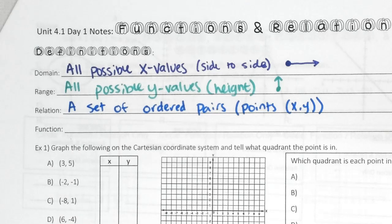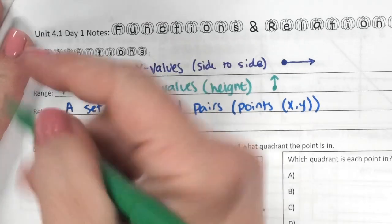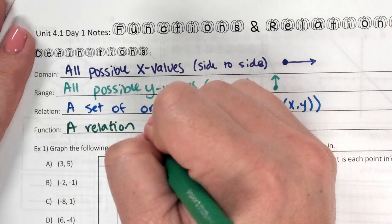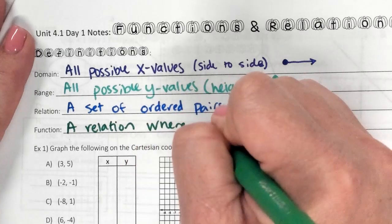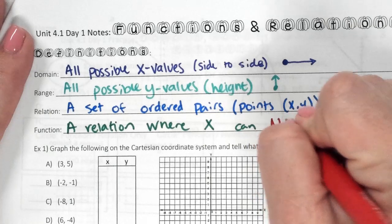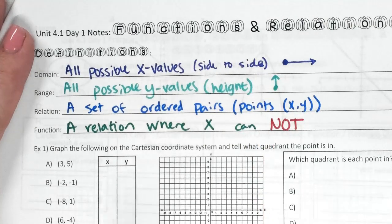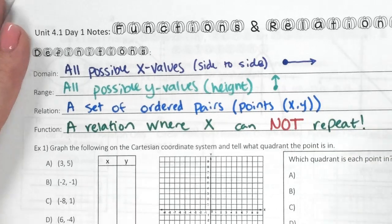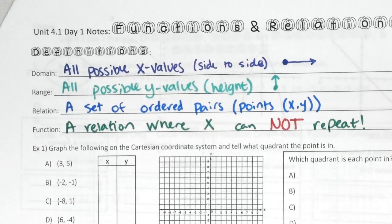A function is a relation where X cannot repeat. Does it say anything about Y? No. It's only X that we worry about — X cannot repeat for it to be a function. So a function is always a relation, but a relation is not always a function.